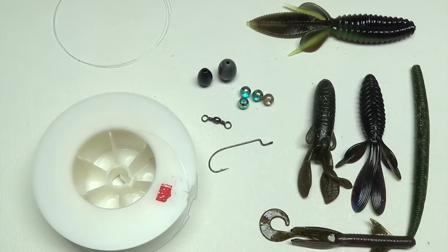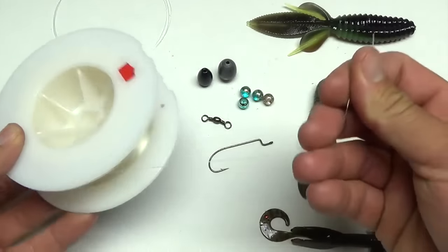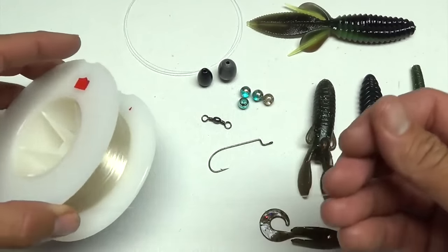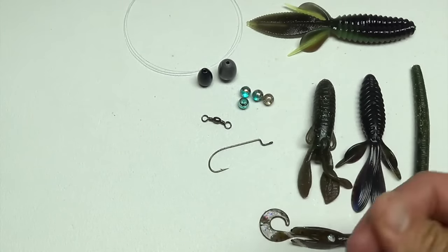You always want two different test line, in my opinion. For my main line I'll go with a 20 pound test usually, but that's what I have here. This is 20 pound fluorocarbon. This will just be your line coming off your reel here.